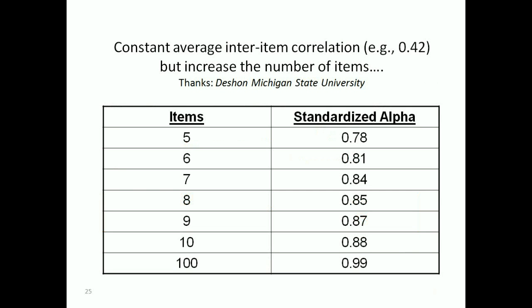And this is what happens when we hold the mean inter-item correlation coefficient at 0.42 and increase the items on the questionnaire, thanks to Deschon Michigan State University for this. So you could theoretically just increase alpha by just repeating the same question.